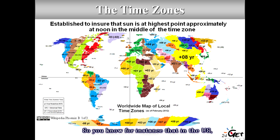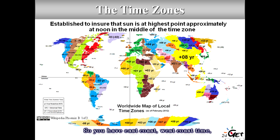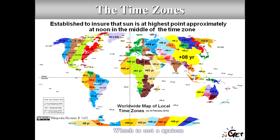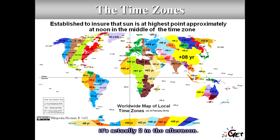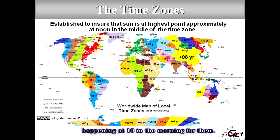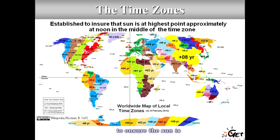Each color on this map corresponds to a different time zone. In the US you have four time zones — East Coast and West Coast are four hours apart. China, however, uses a single time zone, so noon in Nepal actually falls at 10 in the morning locally. We define all these time zones to ensure the Sun is at its highest point approximately at noon in the middle of each time zone.